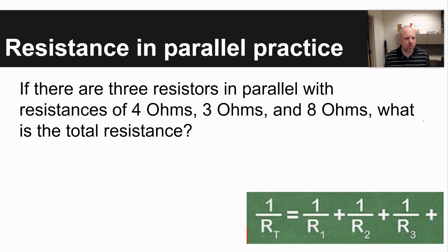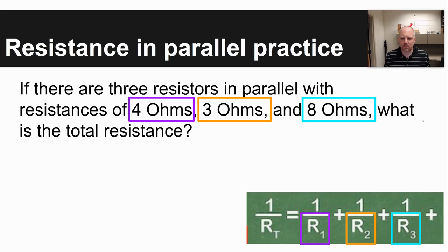Again, to go through an example problem, you can see if there are three resistors in parallel with resistances of 4 ohms, 3 ohms, and 8 ohms, what is the total resistance? I'd identify the different resistors. Those are resistors 1, 2, and 3 in purple, orange, and then teal. You'd use the equation 1 over R total is equal to 1 over R1, et cetera, because these resistors are in parallel.